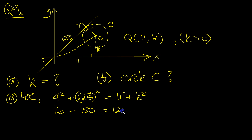121, plus k squared. So k squared is equal to 196 minus 121. 96 takes 21 is 75. So k is equal to 75, which is 5 root 3.